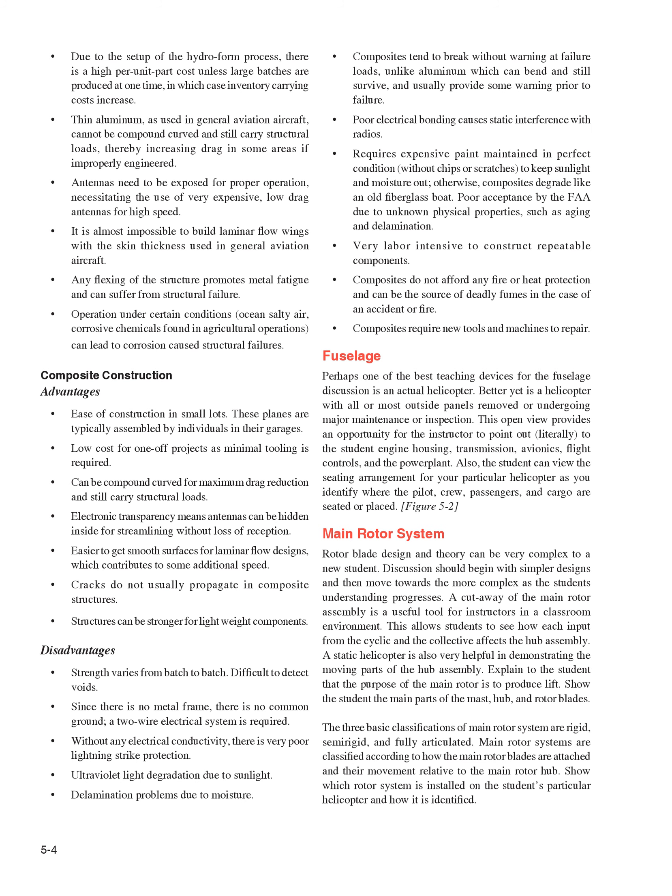Composites tend to break without warning at failure loads, unlike aluminum which can bend and still survive, and usually provide some warning prior to failure. Poor electrical bonding causes static interference with radios. Requires expensive paint maintained in perfect condition without chips or scratches, to keep sunlight and moisture out; otherwise composites degrade like an old fiberglass boat. Poor acceptance by the FAA due to unknown physical properties such as aging and delamination. Very labor-intensive to construct repeatable components. Composites do not afford any fire or heat protection and can be the source of deadly fumes in the case of an accident or fire. Composites require new tools and machines to repair.